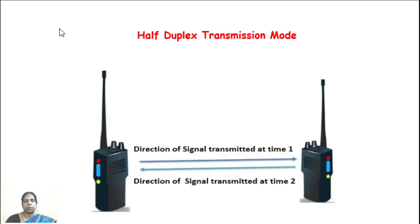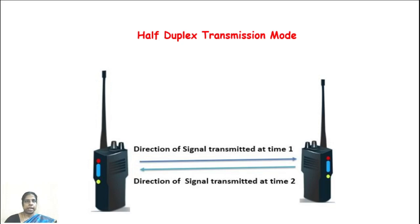In half duplex transmission mode, communication between the sender and receiver takes place one at a time in both directions. Both sender and receiver can transmit and receive data, but only one is allowed to transmit at a time. Half duplex is like a one-way lane where a car going in the opposite direction must wait until the road is clear. A walkie-talkie is the best example — speakers at both ends must speak one by one and cannot speak simultaneously.